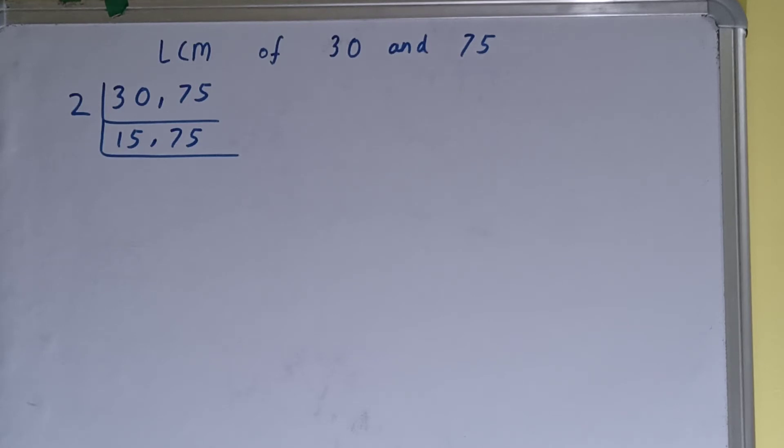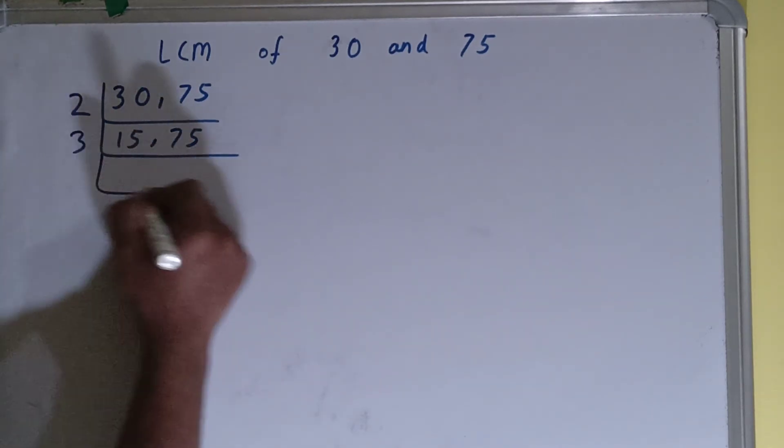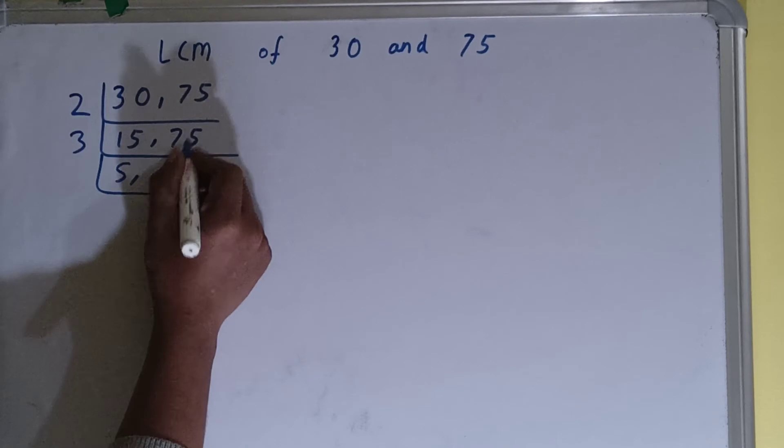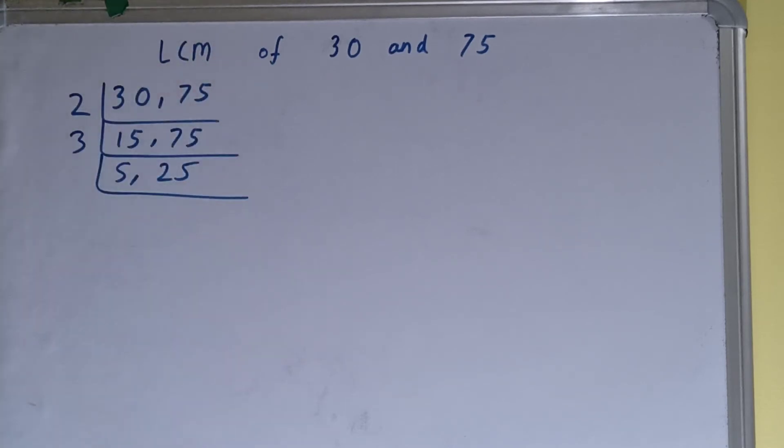This will become 5 and this will become 25. Now again, if you check, is any of the numbers divisible by 3? None of them are, so we'll go to the next prime number, that is 5.